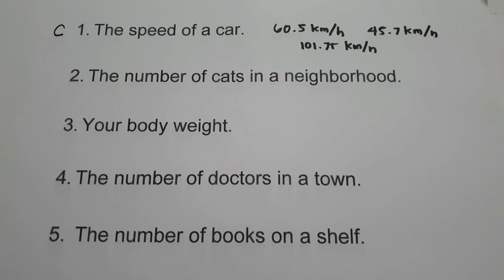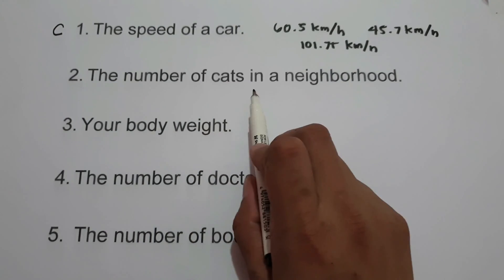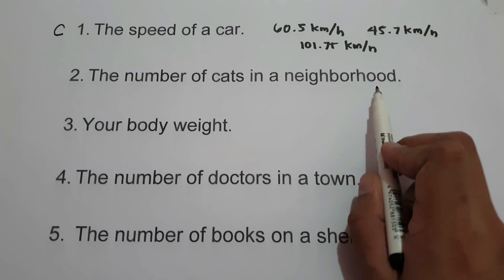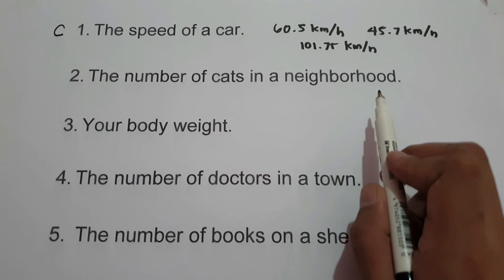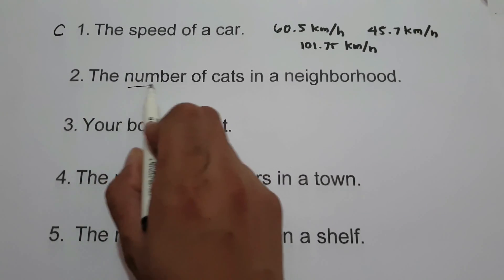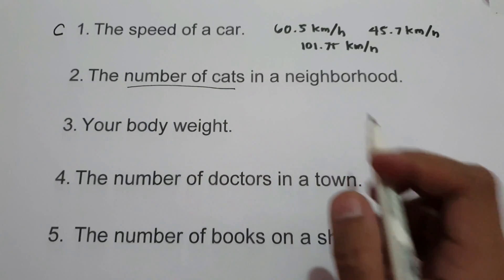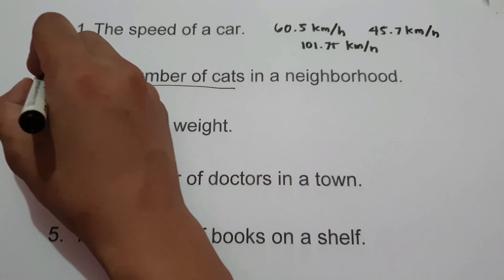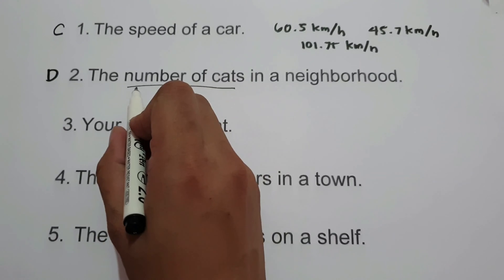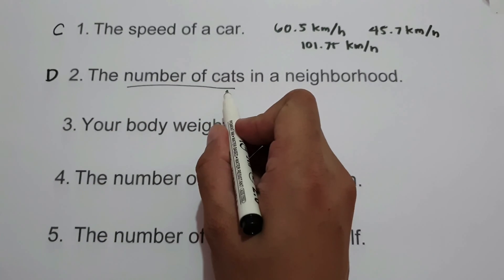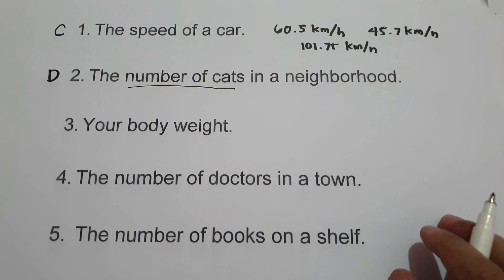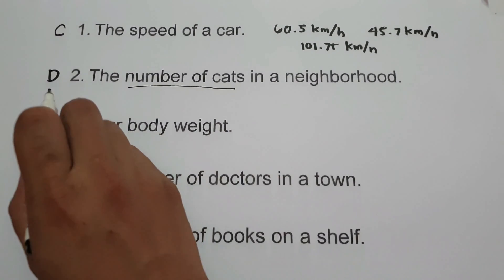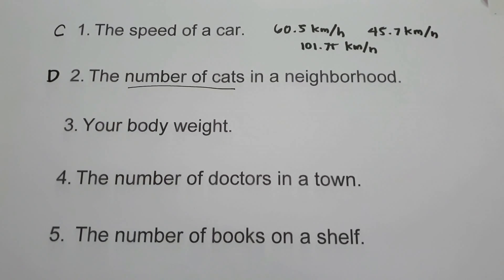On number 2, the number of cats in a neighborhood. Whenever we talk about the number of cats, we are talking about discrete random variable, because the number of cats can be counted. That's why number 2 is an example of discrete random variable.